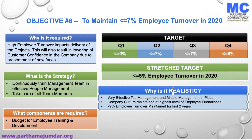Next, we need to establish whether the objective is realistic or not. This company feels they have a very effective top management and middle management, and the company's culture is very highly employee-friendly. Further, the company's assessment is that they have been able to maintain less than seven percent employee turnover for the last two years. For objectives like this, companies and departments have to be very honest in assessing their current situation, otherwise it can become very difficult to meet the objectives.